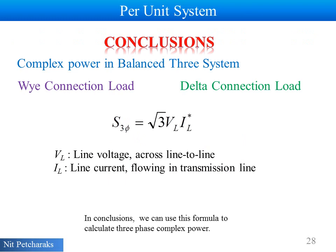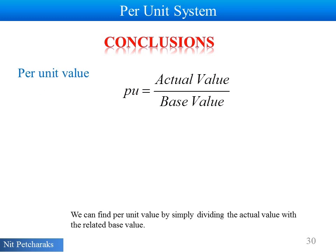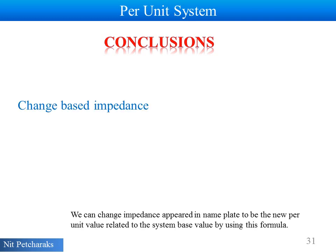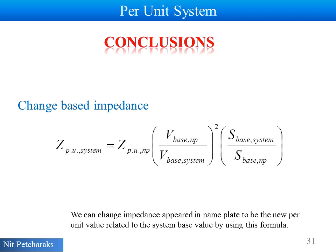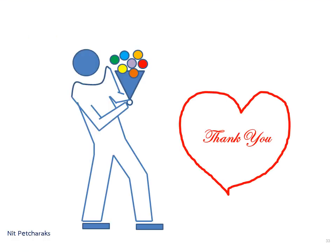In conclusion, we can use this formula to calculate reference complex power. We can find base current and base impedance from these equations. We can find per unit value by simply dividing the actual value with the related base value. We can change the value of impedance appeared in nameplate to be the new per unit value related to the system base value by using this equation. We can use this equation to calculate complex power in per unit system. Thank you for your attention. Please stay tuned for more clips.